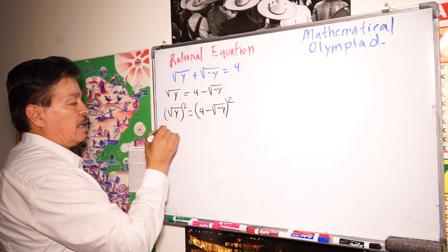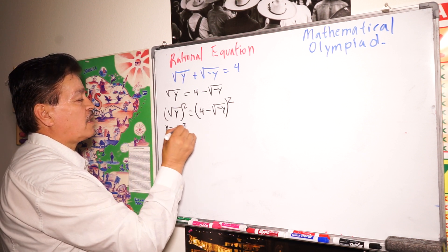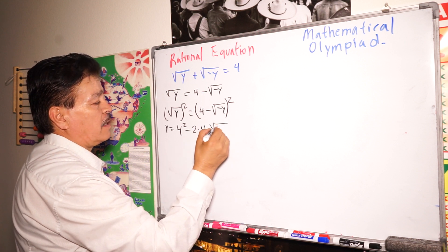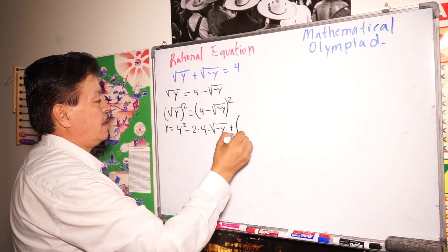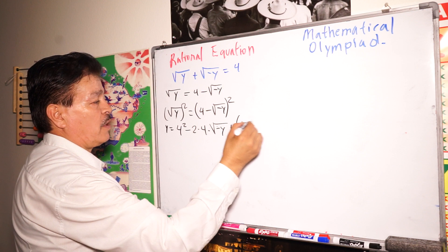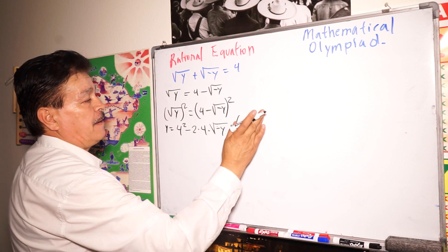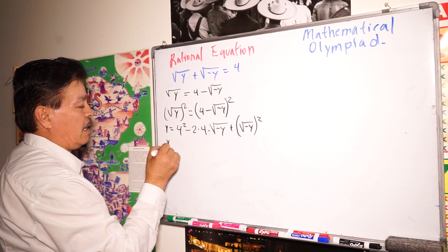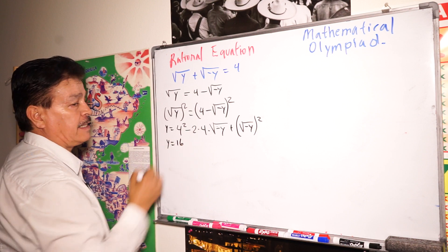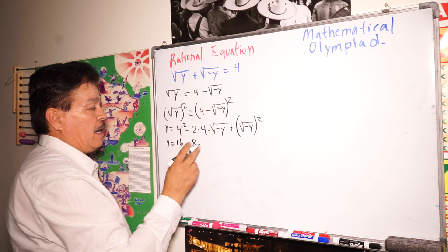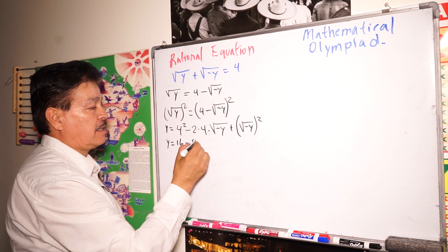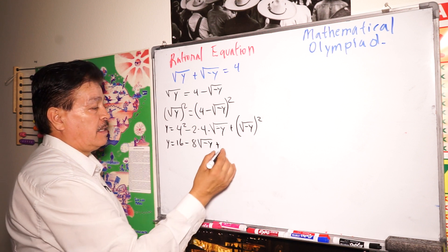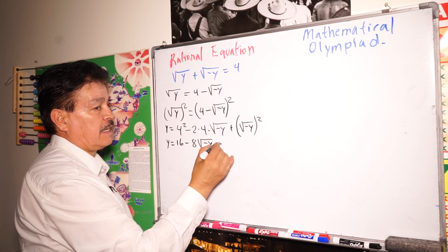Now simplify this. We are going to have y equals 4 to the second power, minus 2 times 4 times square root of negative y, plus square root of negative y to the second power. Simplifying further, that gives us y equals 16 minus 8 times square root of negative y, minus y.